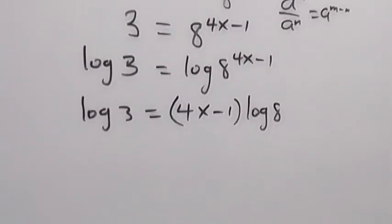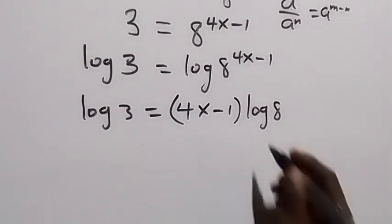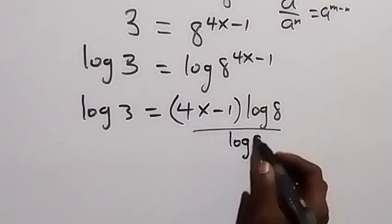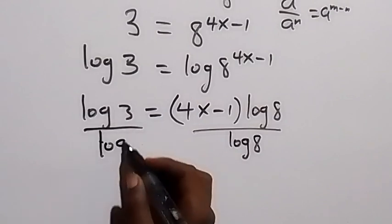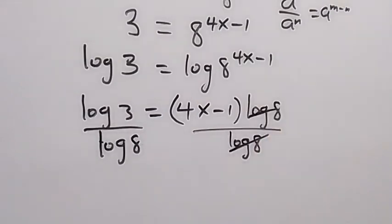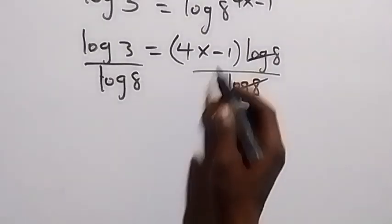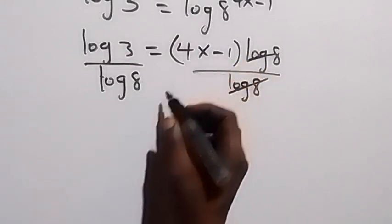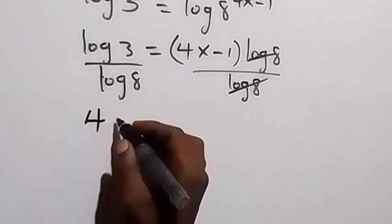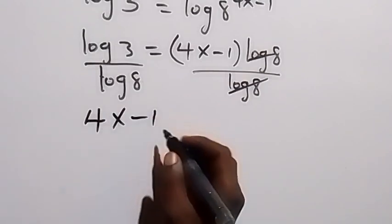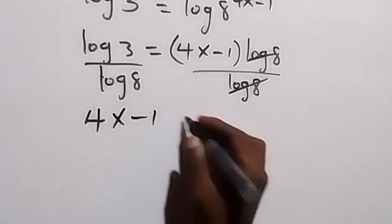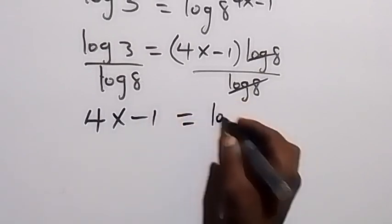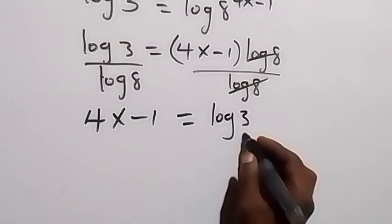In the next step, we divide both sides by log 8. Log 8 cancels on the right side, and what we have left is 4x minus 1 equals log 3 over log 8. By change of base, this becomes log 3 base 8.